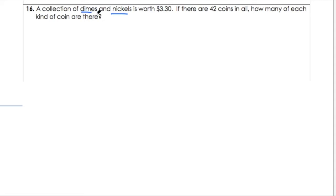The problem says a collection of dimes and nickels is worth $3.30. If there are 42 coins in all, how many of each kind of coin are there? Look at the question as we've been saying that's going to tell us what our variables should be. So how many of each? We're talking about dimes and nickels.